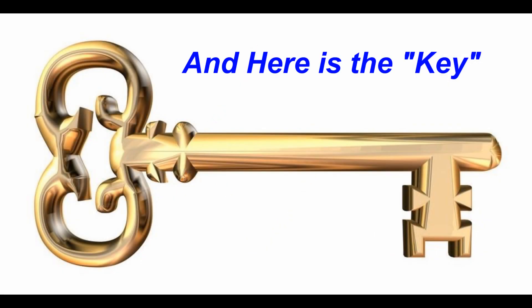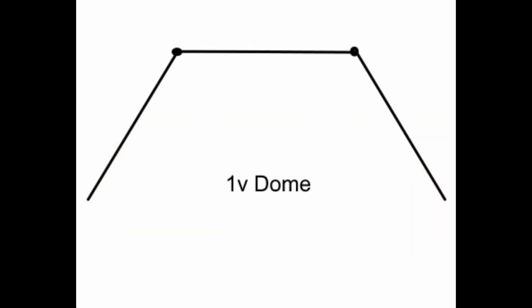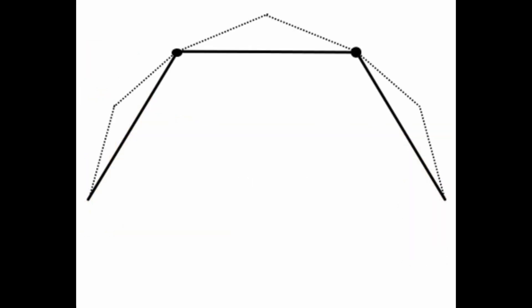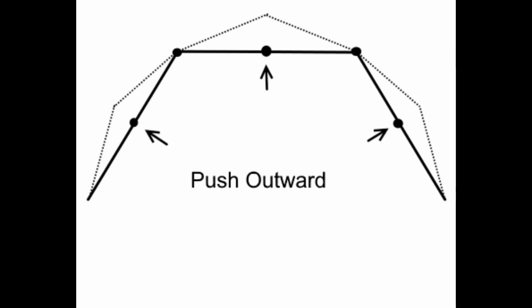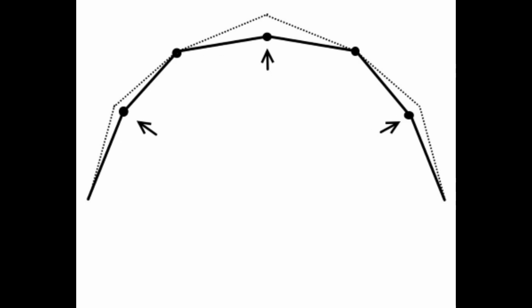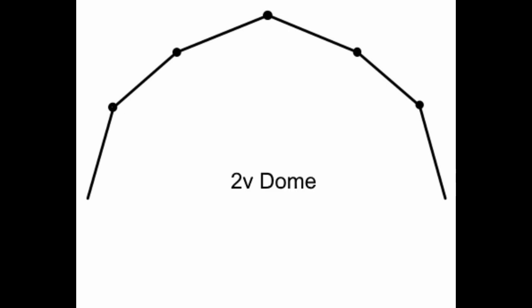And here is the key: the lengths of the edges or struts of the new triangles are changed in a mathematical way to make the dome more spherical. During tessellation, the 1 frequency edges are subdivided into 2 edges joined by a vertex. The lengths of the edges are changed so that each new vertex is pushed outward at equal distance from the center of the dome, making the 2 frequency dome more spherical than the 1 frequency dome.